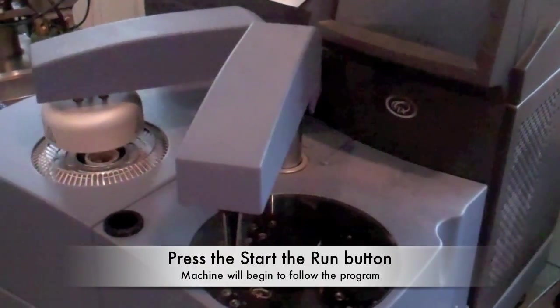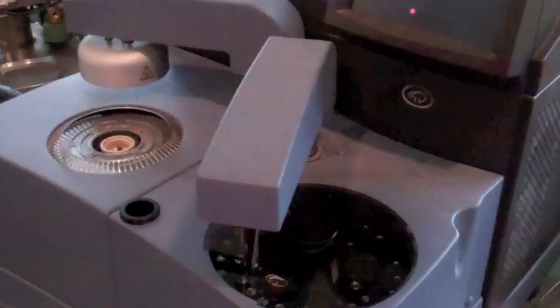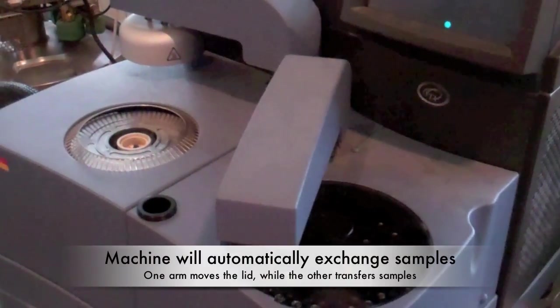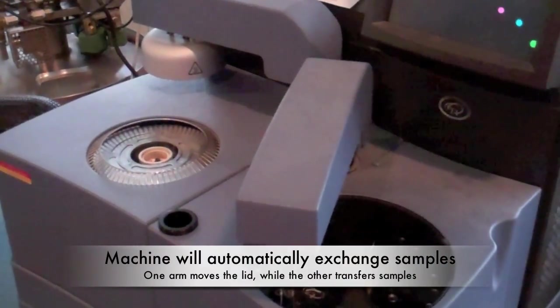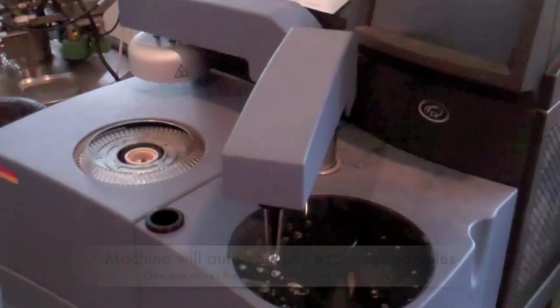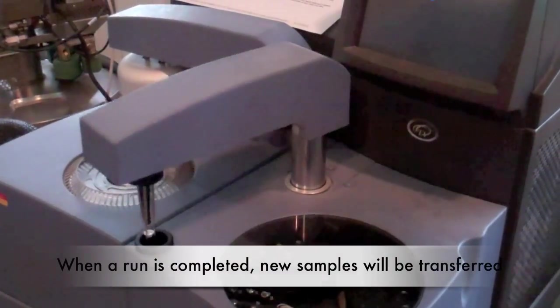Once the software information is correct and the samples are loaded, start the experiment by clicking start the run. The machine will begin to follow the program and automatically select and place the proper sample and reference pan for the current run. One arm will transfer the samples while the other moves the outer cover.